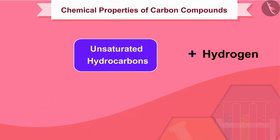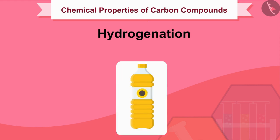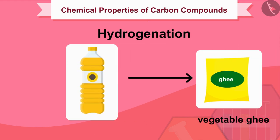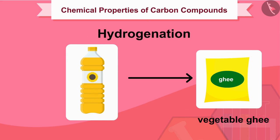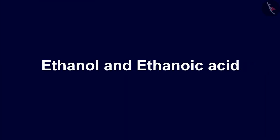The addition of hydrogen to an unsaturated hydrocarbon is called hydrogenation. This hydrogenation is the process used to prepare vegetable ghee from vegetable oils. In this video, we have studied the chemical properties of carbon compounds. In the next video, we will learn about ethanol and ethanoic acid.